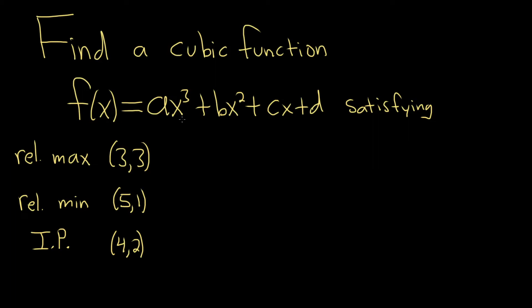In this problem we have to find a cubic function of the form ax³ + bx² + cx + d satisfying these conditions. We have that the relative max is at the point (3, 3), the relative min is at (5, 1), and the inflection point is at (4, 2).